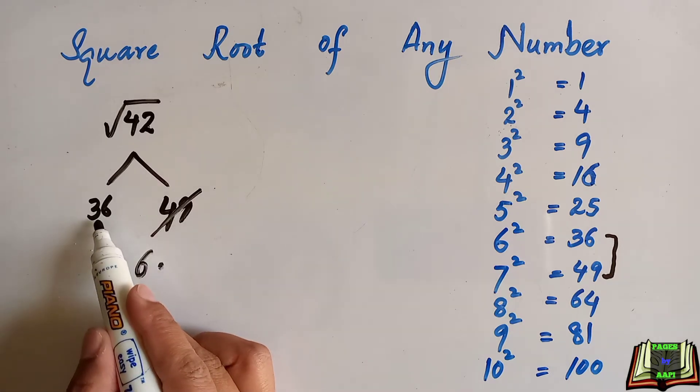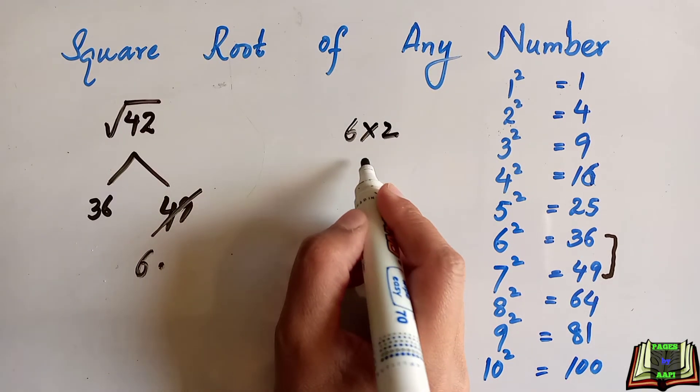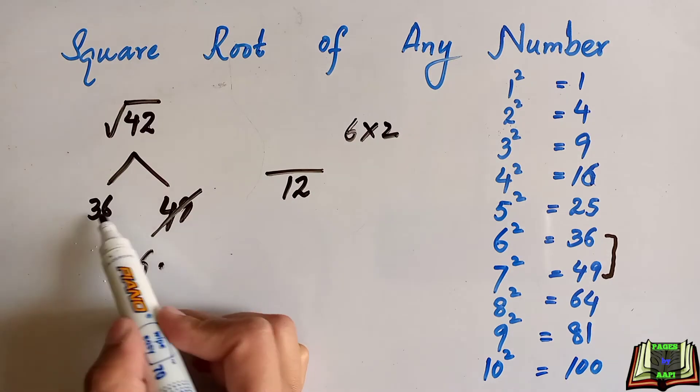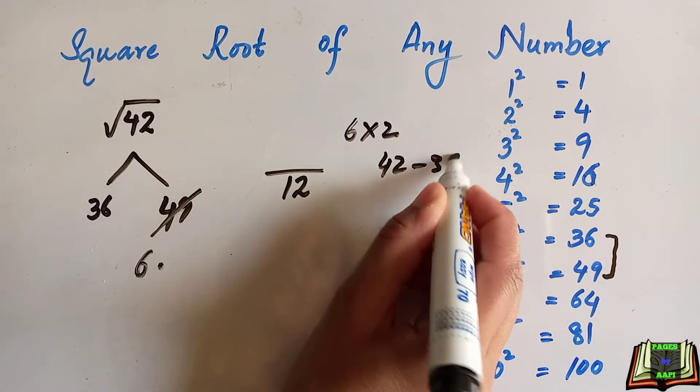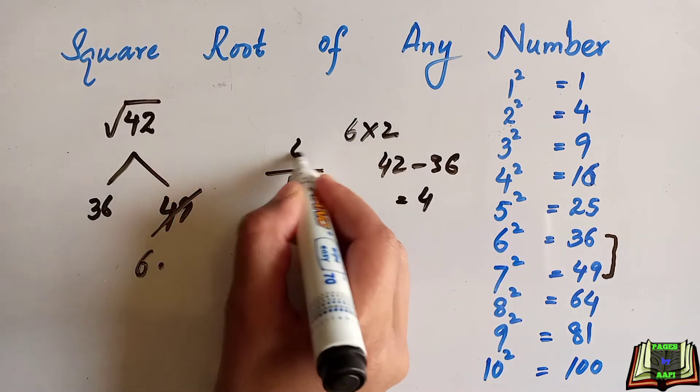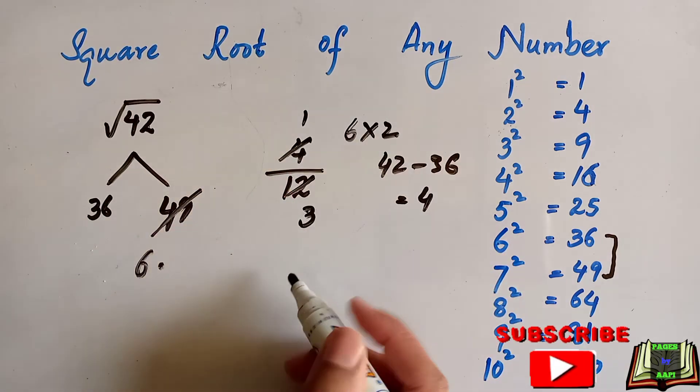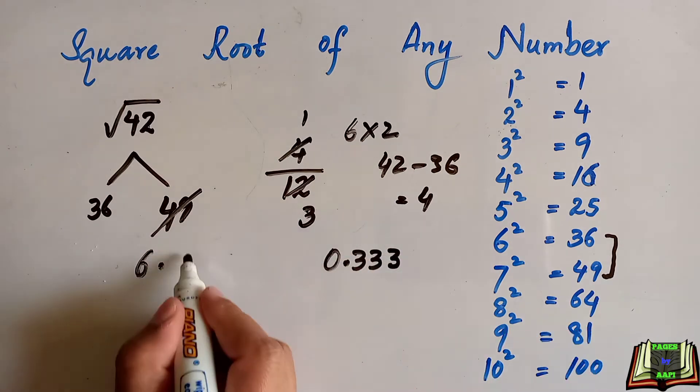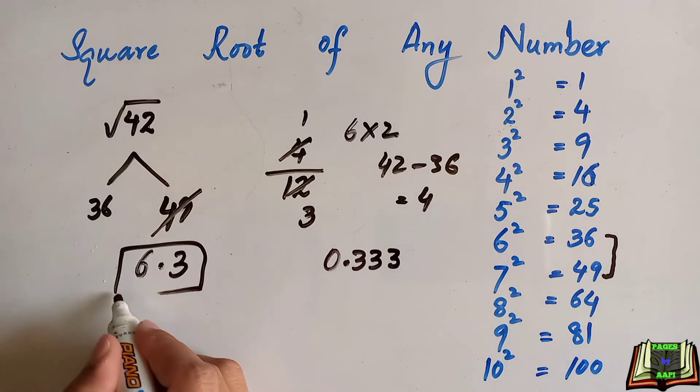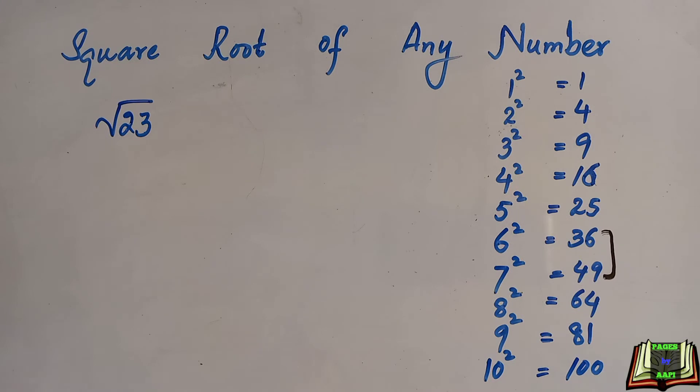For this, we will double the approximate root, meaning 6 times 2, and keep it as the denominator. On the numerator we keep the difference: 42 minus 36 equals 4. 4 over 12 equals 0.33. The required square root of 42 is approximately 6.3. Let's do another example to make it more clear.